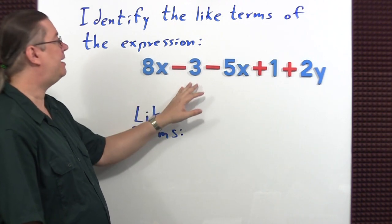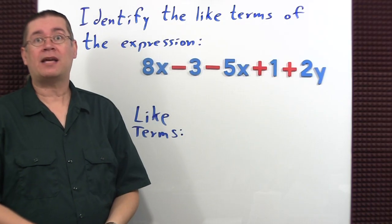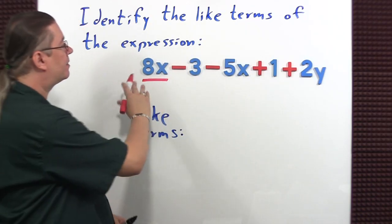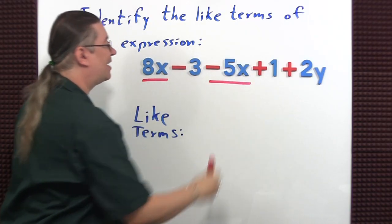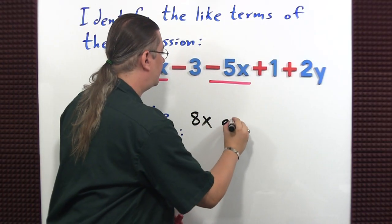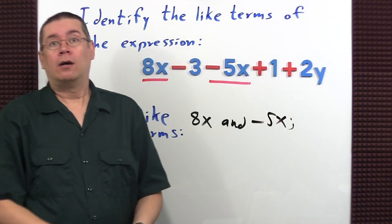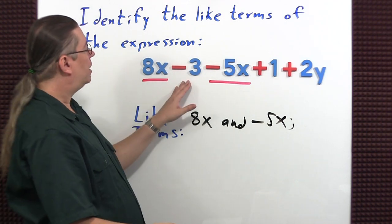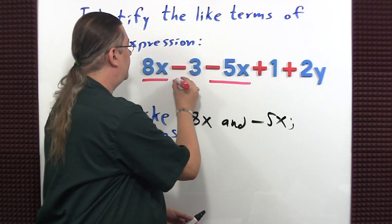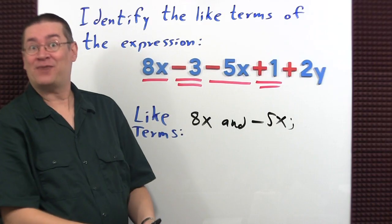expression 8x minus 3 minus 5x plus 1 plus 2y. Like terms have the same variable parts. So here's one that has an x part — any others? Let's write those down: 8x and negative 5x. Are there any more like terms? Here we have negative 3 — constants are considered like terms. Any other constants? Right here with 1 — let's go ahead and write those down: